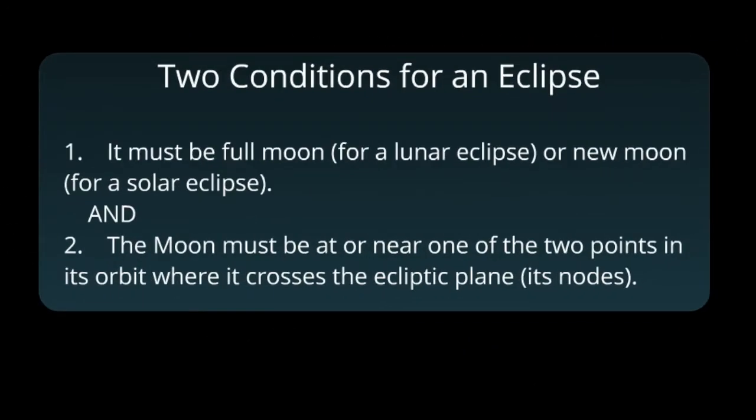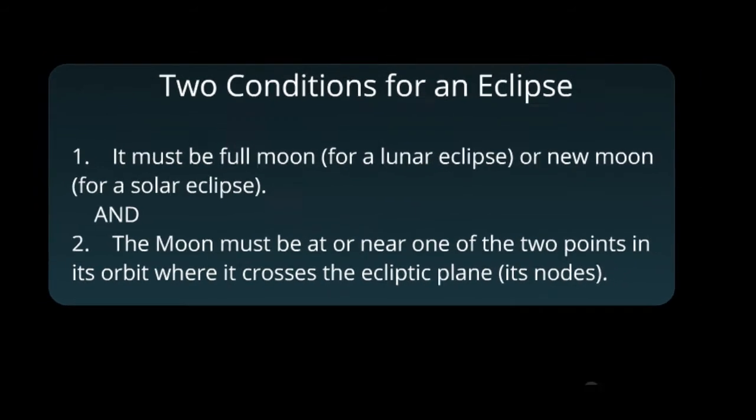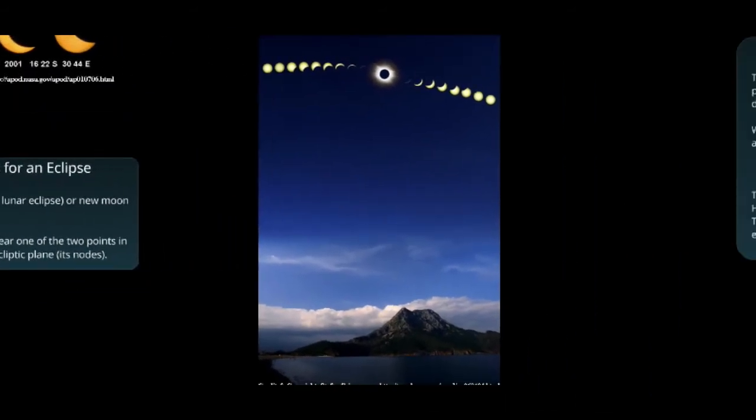There are two conditions for us to have an eclipse. We must have a full Moon for a lunar eclipse, or a new Moon for a solar eclipse. And the Moon must be at or near one of its nodes in an orbit, which is where it crosses the ecliptic plane. Here is a time lapse of a solar eclipse. If you ever have an opportunity to watch one, I would highly recommend you go to see it.